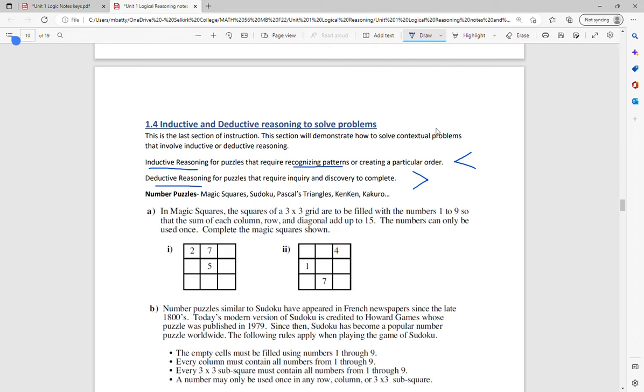So we're going to start out with number puzzles. These might be something that you've done before. I tried to pick different examples that would kind of work for different brains. Maybe you are a Sudoku player, maybe you've done these kinds of puzzles before. The first ones here are magic squares. You fill the boxes with numbers 1 through 9 so that the sum of each column and row and diagonal adds up to 15. In these ones, the numbers can only be used once and we're supposed to complete them.